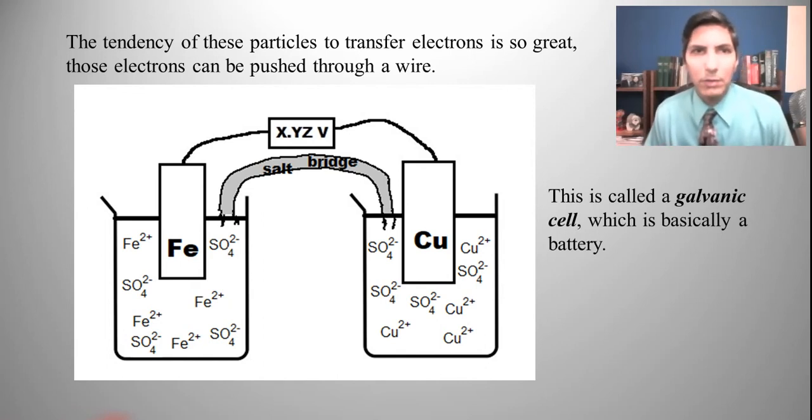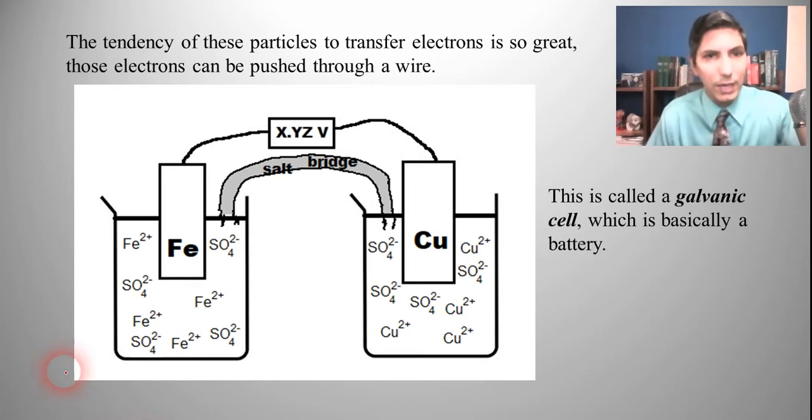And we can use this battery to push electrons through a wire and actually get some useful work, get some useful electricity out of this redox reaction. So this is a setup of a battery for all practical purposes. In chemistry, we usually call it a galvanic cell.